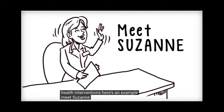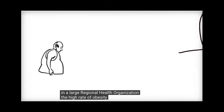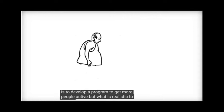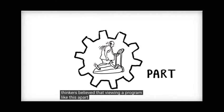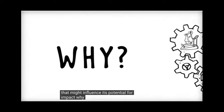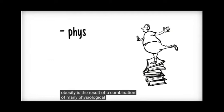Here's an example. Meet Suzanne. Suzanne is a senior manager in a large regional health organization. The high rate of obesity is an issue in her community and she's been mandated to address this problem. Her first instinct is to develop a program to get more people active. But what is realistic to expect from this approach? Systems thinkers believe that viewing a program like this in isolation of the larger system within which it operates tends to ignore other aspects that might influence its potential for impact.